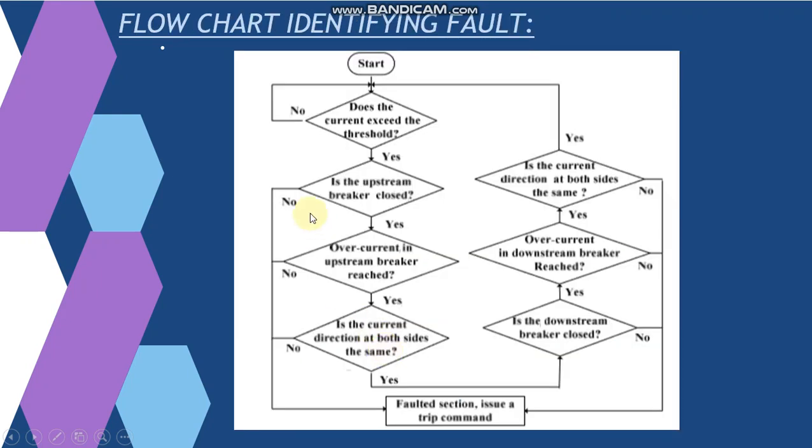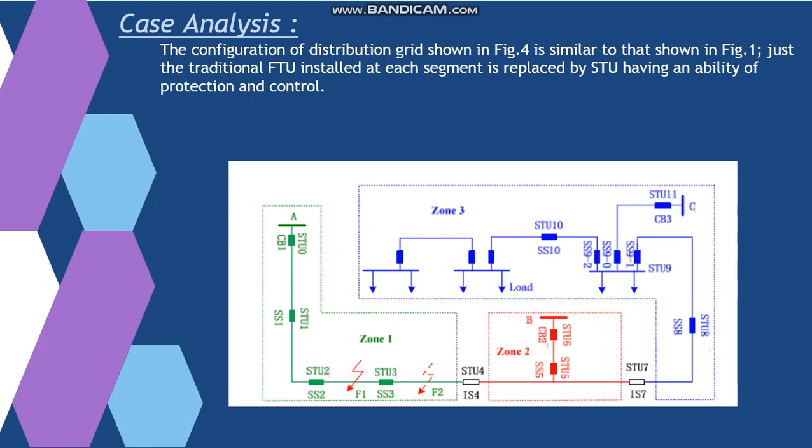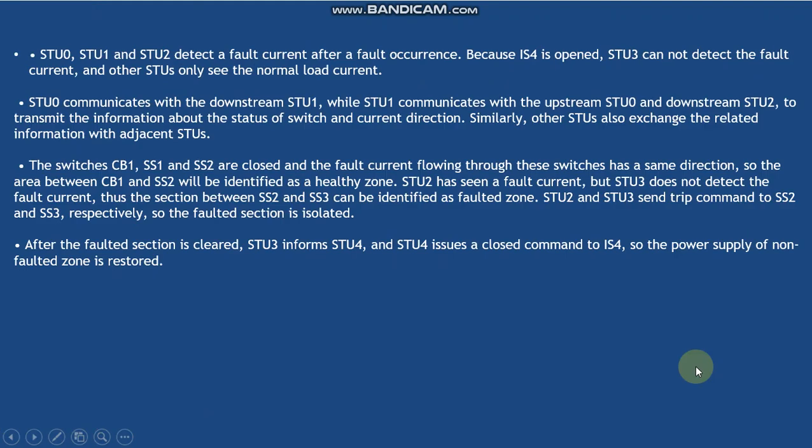So basically this is the flow chart which will be used to identify the faulted section. There is a case analysis. What we have done over here is similar to the diagram, the single line diagram which was explained initially. Just the traditional FTUs at each segment are replaced with the STU, you can see over here, which have the ability of both protection and control.